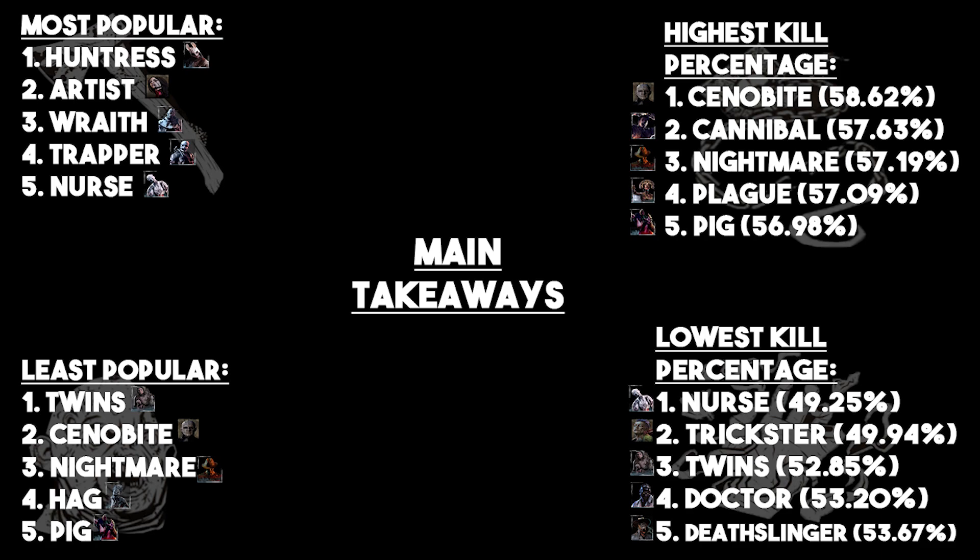Both Trapper and Wraith are far easier to use than, say, Hillbilly, so I'm not very surprised by that. Artist is one who will probably fall from this list at some point, but she's the most recently released and she's actually pretty good, so that's a good recipe to be in this list. Nurse is very interesting — she's in the top five most popular but also number one in the lowest kill percentage. Everybody knows Nurse is the best killer in the game, so obviously people are going to play her and try to get good at her so they can stomp SWF squads, but most people don't end up making that climb.